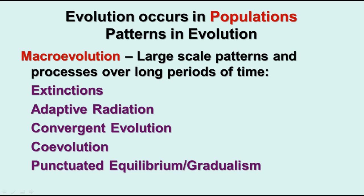Several different things are involved in macroevolution. We have extinctions, adaptive radiation, convergent evolution, coevolution, and punctuated equilibrium. We'll talk about each one of these.